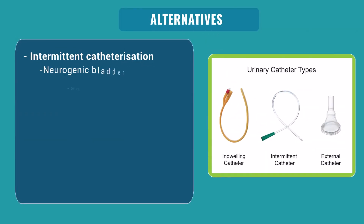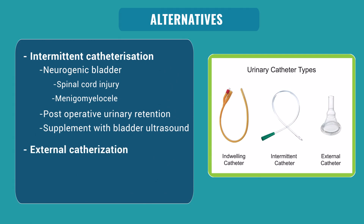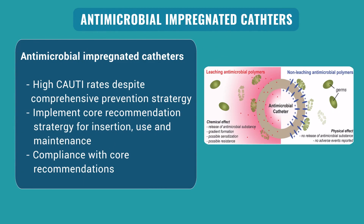Compared to indwelling catheters, alternate catheterization strategies like intermittent catheterization or external drainage — such as condom catheters — carry a lower risk of infection and can be used in appropriate patients. Intermittent catheterization can be used in patients with neurogenic bladder or post-operative urinary retention, aided by bladder ultrasound. External catheterization can be used in cooperative male patients without obstruction or retention. In centers with high CAUTI rates despite full protocol compliance, antibiotic-impregnated catheters can be useful, though routine use in all patients is not recommended.